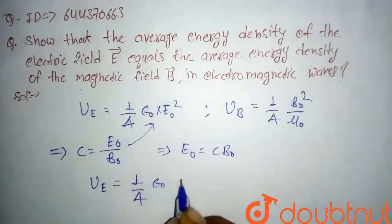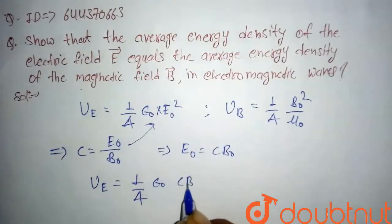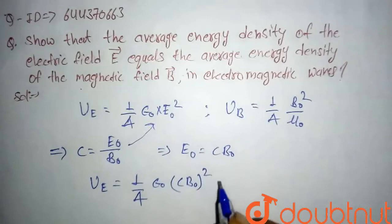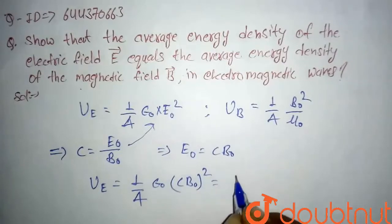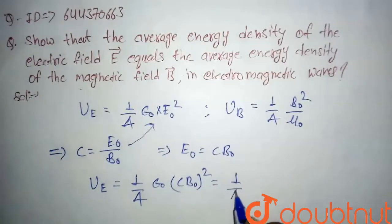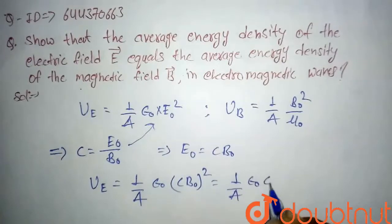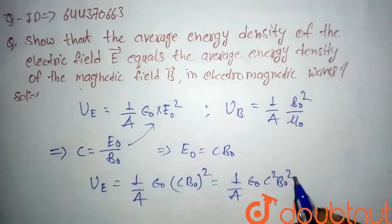Substituting this value, U_E becomes 1 by 4 times epsilon naught times (cB₀) squared. If we solve, we get 1 by 4 times epsilon naught times c squared times B₀ squared.